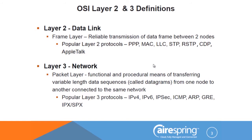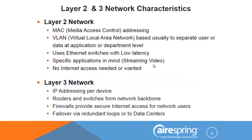Those IPSec tunnels we sell to back up MPLS loops are a Layer 3 network option. ICMP — that's a fancy word for ping — is what Layer 3 people use to make sure everyone in the network is up and running. Address resolution protocol (ARP) gives you the address so you can operate at Layer 3. IPX/SPX from Novell back in the 90s is also a Layer 3 network protocol. The main difference between Layer 2 and Layer 3: Layer 2 is node-to-node, Layer 3 is network-to-network type traffic.